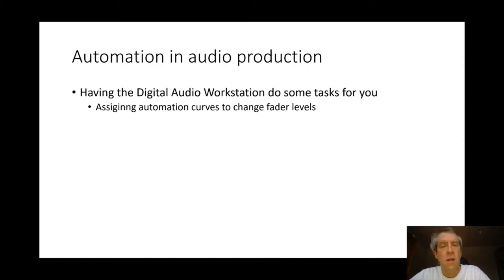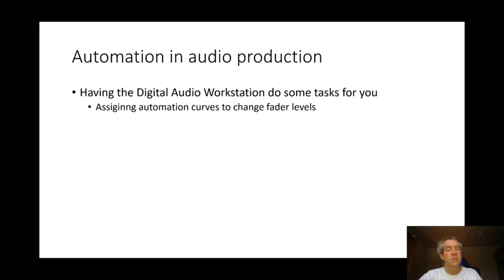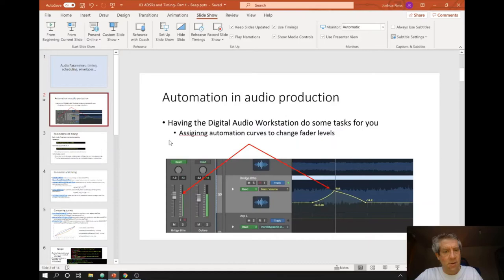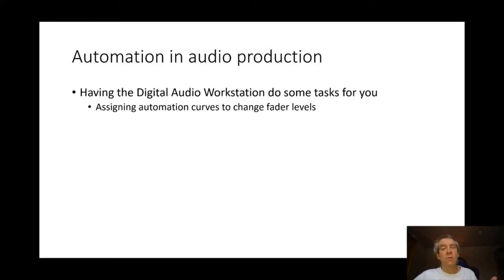First, a little bit of background. Automation is a big deal in audio production. It's essentially any form of automating tasks, so having the digital audio workstation or mixing console do some of the tasks for you. One of the ways this is done is by assigning automation curves to change the fader level.